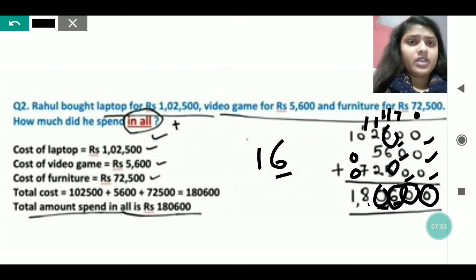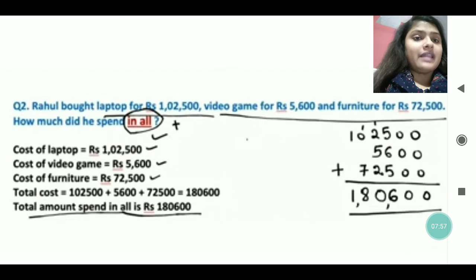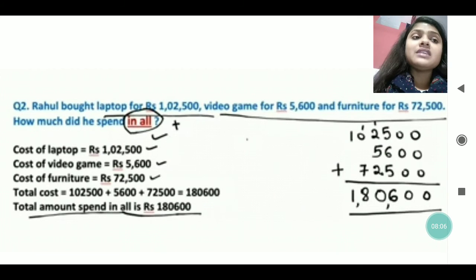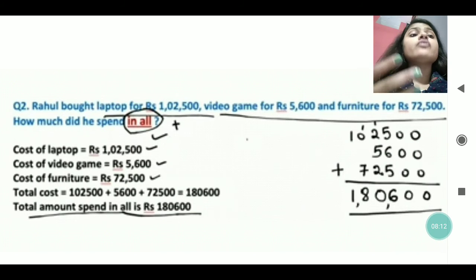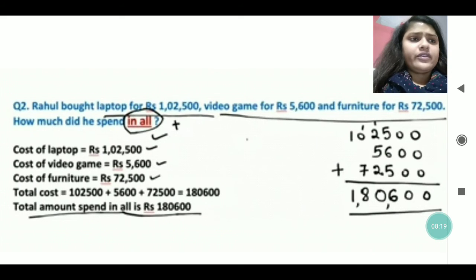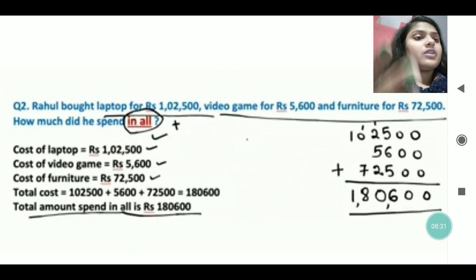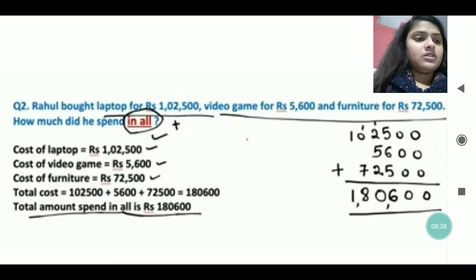So it all depends on the question, and according to that we write the statement. If the price of something is given, we use the words 'cost,' 'amount,' or 'price.' When a number is given, we use 'number' or 'quantity.' When weight is given, we use 'weight' — for example, weight of rice, weight of pulses, weight of vegetables. For all word problems we don't use the same kind of statement; it differs according to the question.